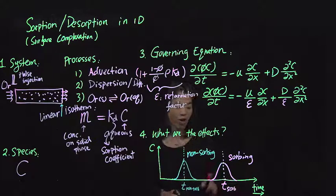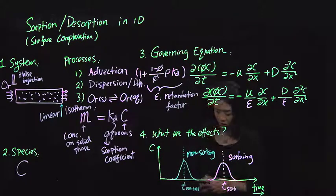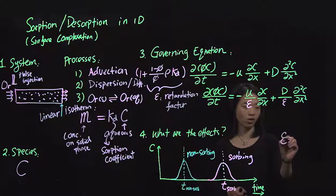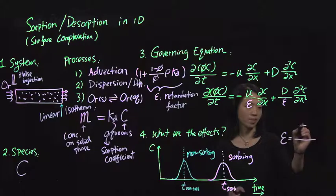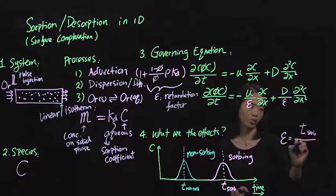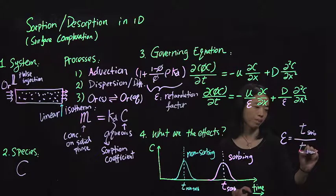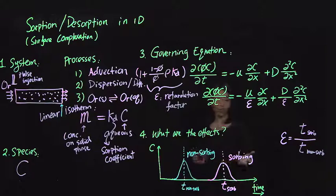If we are doing this experiment, measuring these and drawing these figures, you actually can calculate this epsilon value, or retardation factor, which is equal to the time of the sorbing species, which is the peak of the sorbing species versus the time of non-sorbing.